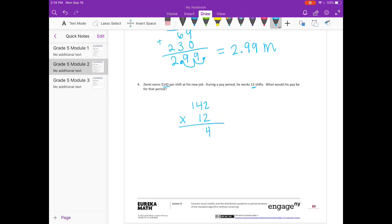So 12 shifts and he makes $142 per shift. So we are going to do 142 times 12. 2 times 2 is 4. 2 times 4 is 8. 2 times 1 is 2. On to the tens place. 1 times 2 is 2. 1 times 4 is 4. 1 times 1 is 1. Add them together. $1,704.